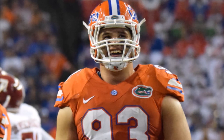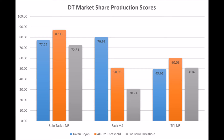First off, let's look at Taven Bryan's production. When you look at his market share data, he has a 77.24 solo tackle market share production score, a 79.96 sack market share production score, and a 49.61 tackle-for-loss market share production score. He pretty much hits every single threshold, at least for a Pro Bowl defensive tackle. The one area where he's a little lax is in the tackle-for-loss data.